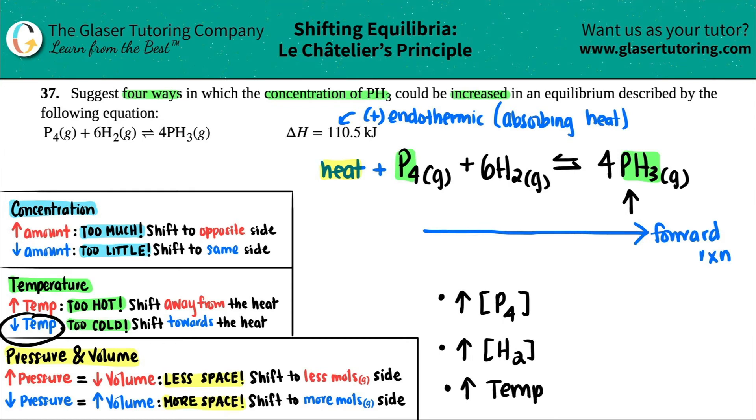Just to show you that it won't be decrease in temp. Decrease in temp means that it's way too cold. And if it's way too cold, you want to go towards the heat. You're way too cold. So then you would shift towards the word heat. And you see how these arrows don't match. So that's why it's not a decrease in temp.